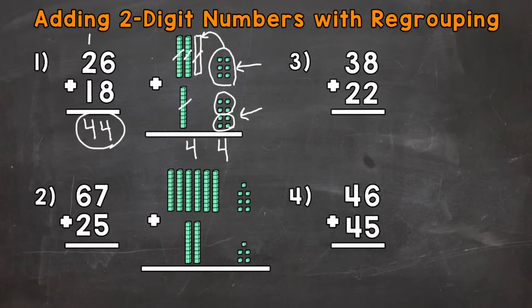44 is our final answer. Now the 4 in the tens place represents 4 groups of 10 and has a value of 40. The 4 in the ones place represents 4 ones and has a value of 4.